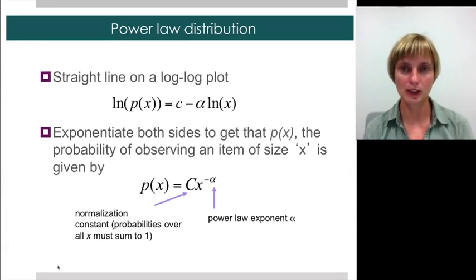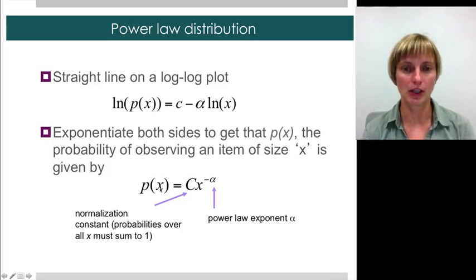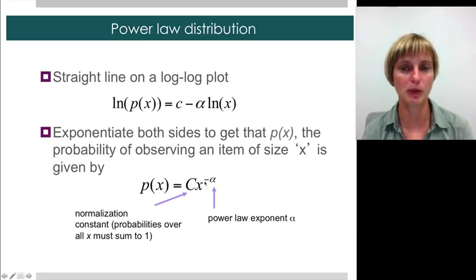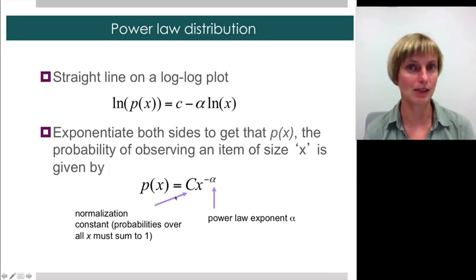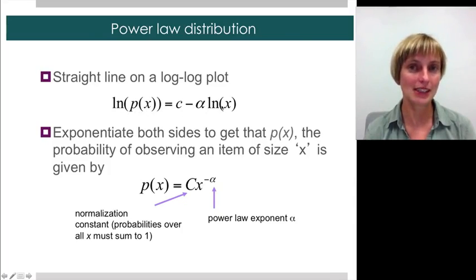The power law distribution written out is that the probability of observing x — say, a word occurring a hundred times — is equal to some constant times x to the minus alpha, where alpha is typically between two and three. And if we take the log of both sides, as if we were plotting on a log-log scale, we indeed see a linear relationship between the log of the probability of observing x and the log of the value x itself.